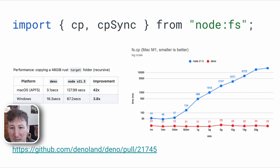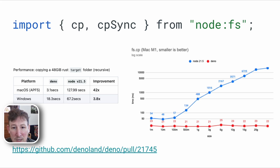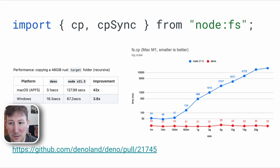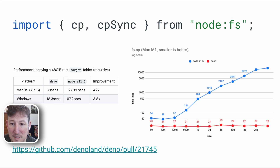A couple of new Node compatibility APIs have been added. CP and CP Sync from the Node FS module are now available. We've been careful to use the best available syscalls, like clonefile on OSX, to provide optimal performance.